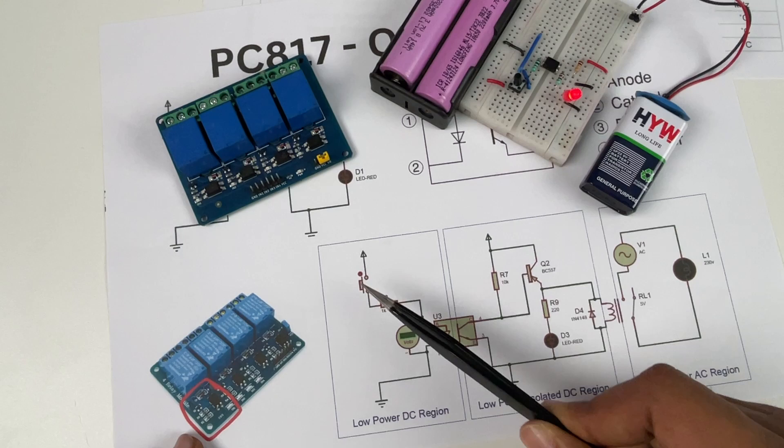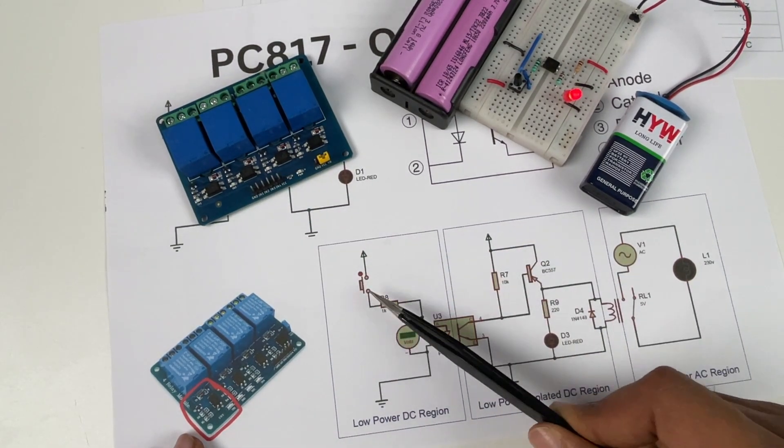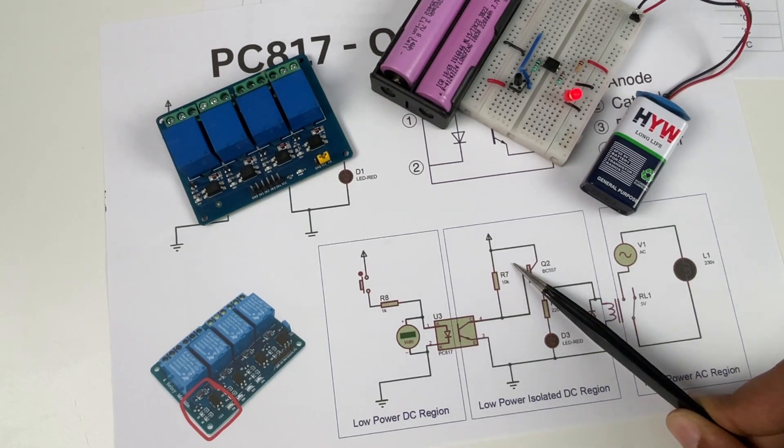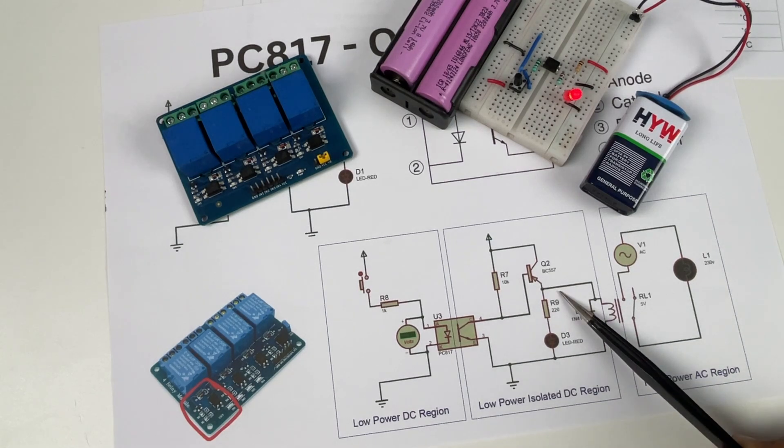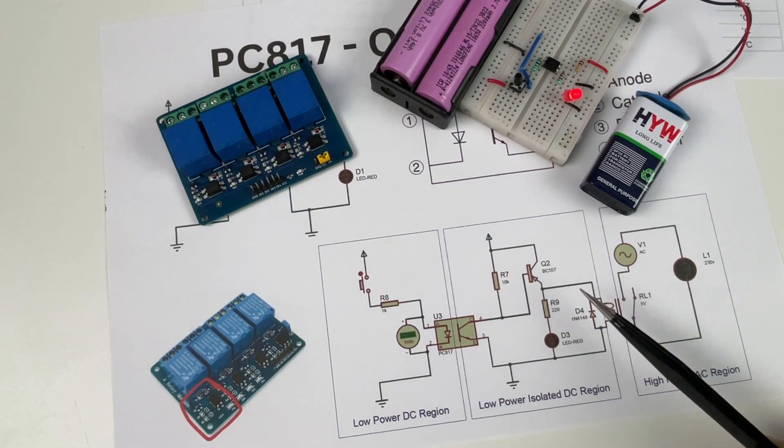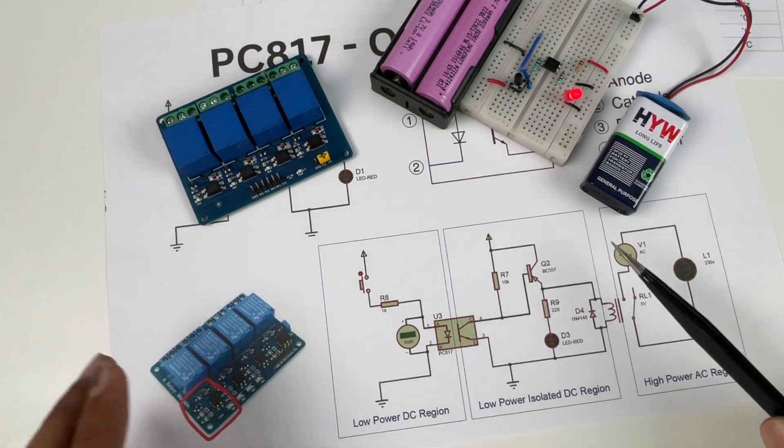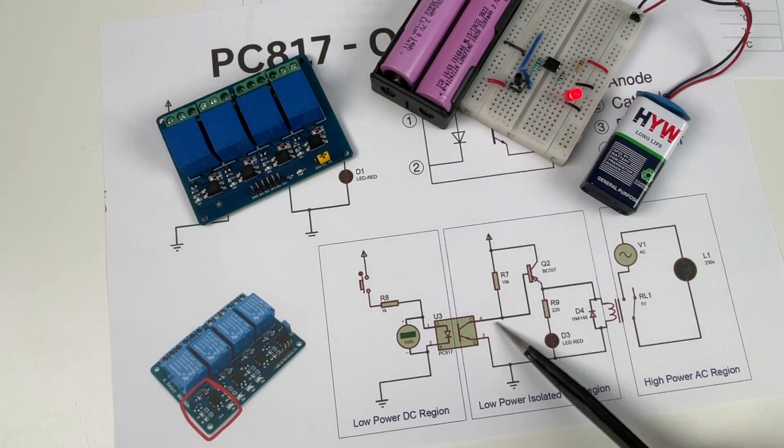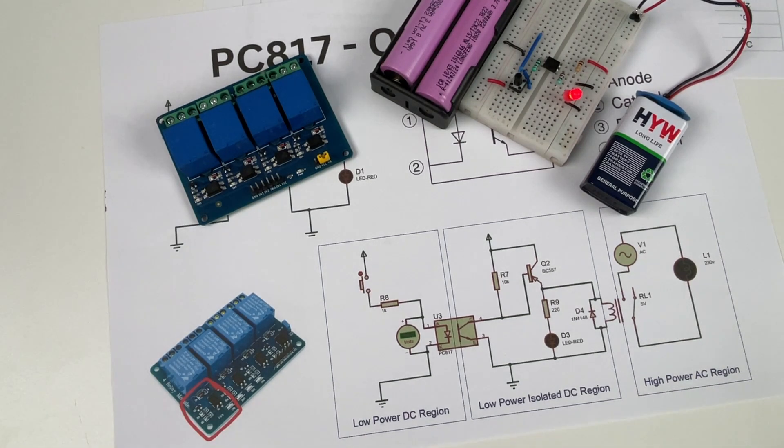So this input will normally come from a microcontroller which is the input pin you see over here. So when the microcontroller gives a logic value it goes to the optocoupler and then we have used a PNP transistor to make sure that when the logic is high the relay is closed. Using this transistor we are controlling this relay through this optocoupler and this way we don't have to have any physical connection between our low power DC region and the high power AC region because of this isolated DC region. So this is a very good example on how an optocoupler is used.